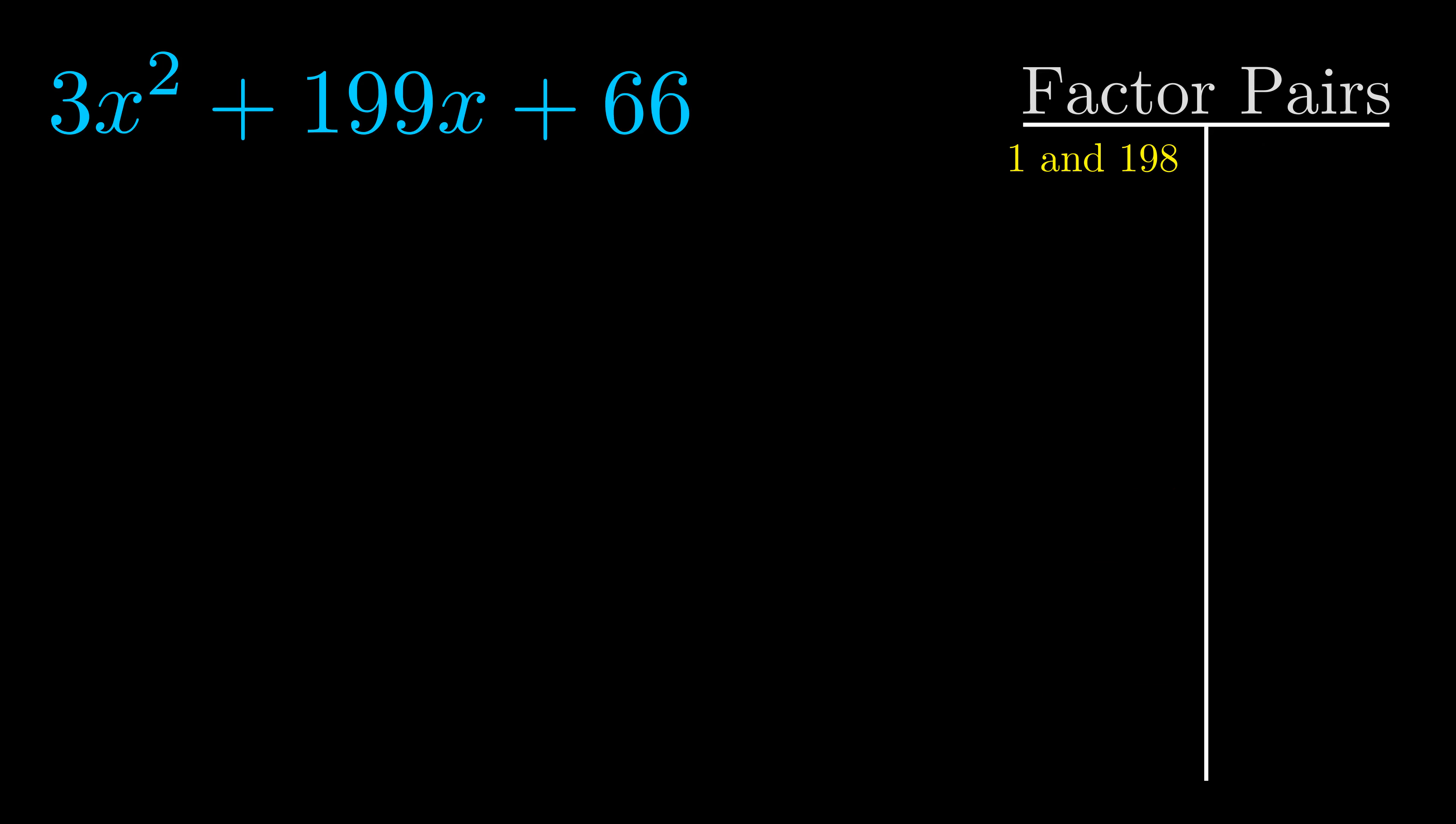Now once we have this factor pair, what we want to do is use it to split up the b value.